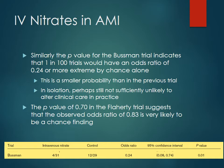Comparing that to the Flaherty trial, they had a p-value of 0.7. Even though the observed odds ratio of 0.83 was looking to be protective, having a p-value of 0.7 means you're 70% likely that these results are just due to chance alone. That would mean the inability to reject the null hypothesis since the p-value is so high.